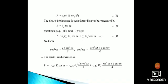The electric field passing through the medium can be represented by E = E₀ cos ωt, equation 3. Substituting equation 3 into equation 1, we get P = ε₀(ψ₁E₀ cos ωt + ψ₂E₀² cos² ωt + ...), equation 4. We know cos² ωt = (1 + cos 2ωt)/2, and cos³ ωt = (cos 3ωt + 3 cos ωt)/4.